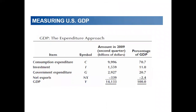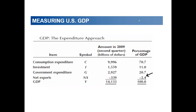Looking at the percentage breakdown of GDP, the most important sector is consumption. In a typical economy, consumption accounts for about 70%, investment 11%, and government 20%. However, this economy shows a trade deficit because imports exceed exports, representing an outflow of money from the country. We then move to the income approach, examining labor, capital, land, and entrepreneurs.